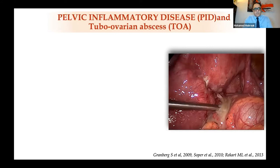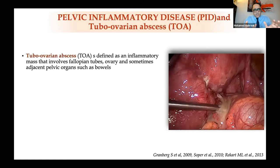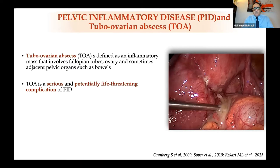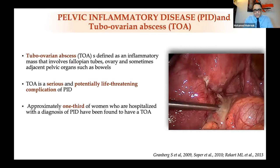This is, by definition, severe pelvic inflammatory disease — an abscess mass involving the fallopian tubes and ovaries, and almost always involving adjacent organs as well. This is a serious, life-threatening complication of PID. One-third of patients who have PID might develop tubo-ovarian abscesses.